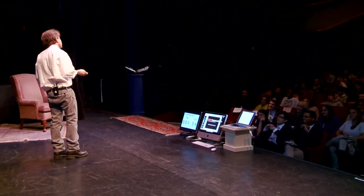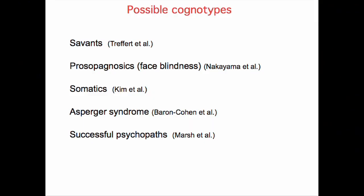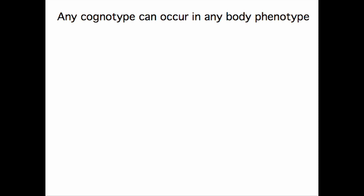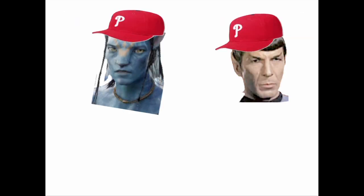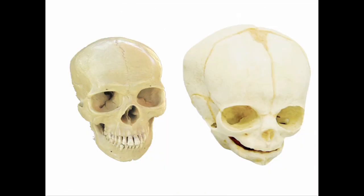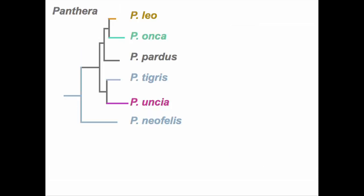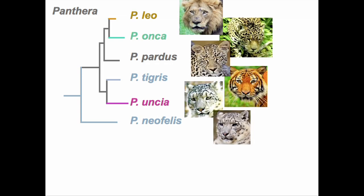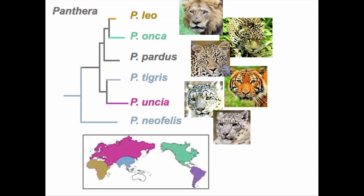There are many, many more categories of cognotypes. One important fact: any of these cognotypes can occur in any body phenotype. If we have two very different body phenotypes, they both might be successful baseball players, or they both might work in Silicon Valley. Our species has an extraordinarily strange recent history. Contrast this with normal species like lions, tigers, and jaguars — closely related species with a normal amount of variation that inhabit different niches and different parts of the world.